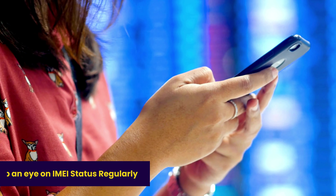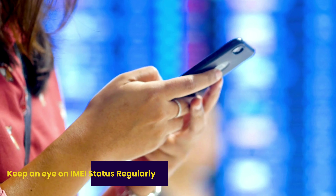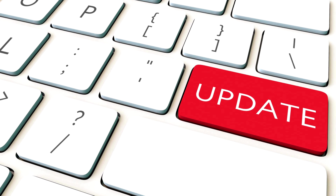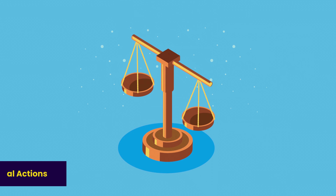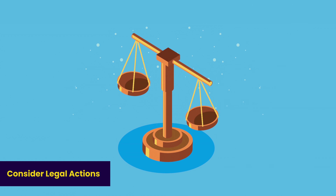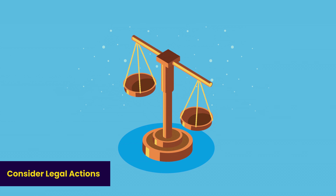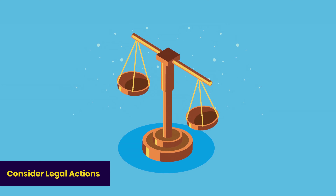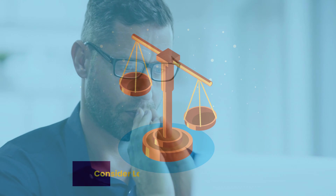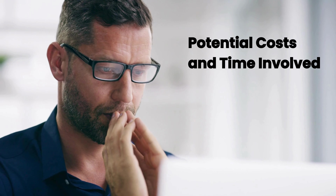Another tip is to check the IMEI status regularly. Blacklists are updated and sometimes devices get removed for various reasons, so use online IMEI status checkers to keep an eye on your device's status. Lastly, if all else fails, consider legal action. If your device was wrongfully blacklisted and you can't get it resolved through the carrier, consult a legal professional — though this should be a last resort due to potential costs and time involved.